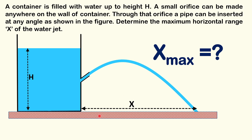Hello students. In this question I have slightly modified a problem you have probably solved before. This is a slight modification, but slight modifications sometimes make our life very difficult. In the general case we have solved, the pipe or orifice had water coming out horizontally. In that case, for maximum horizontal range, the orifice should be at the midpoint and the maximum range equals H/2. But here, not only can we change the position of the orifice, we can also change the direction of velocity of the water coming out of the tank.